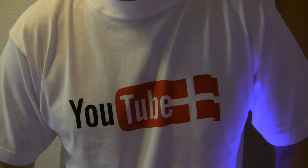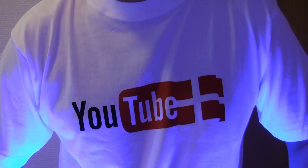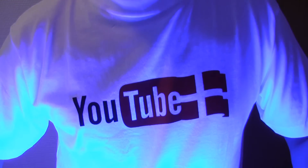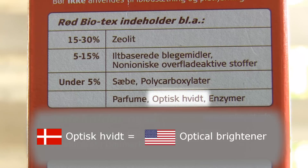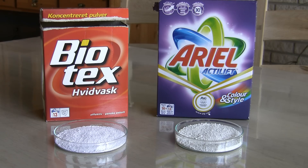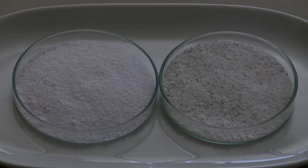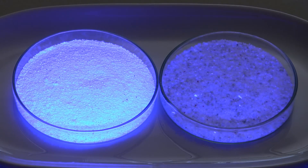Your white clothes also look really white because of fluorescent dyes. Laundry detergents for whitewash also contain fluorescent materials to keep your clothes shiny white. To the left is the detergent for whitewash. Boom! That's bright.